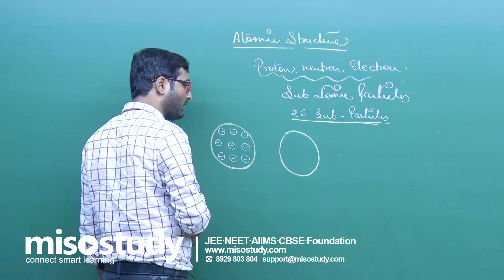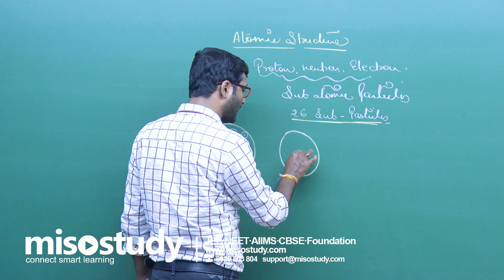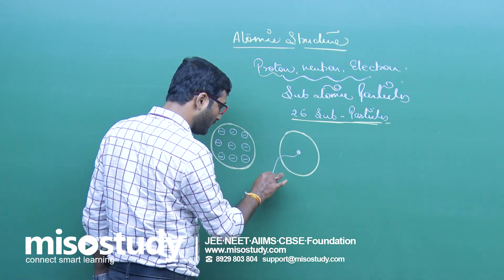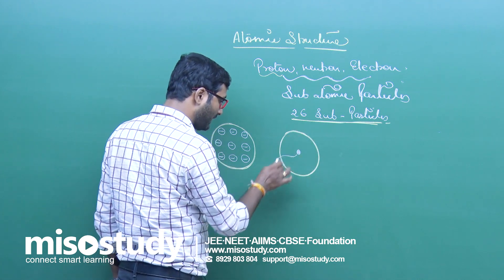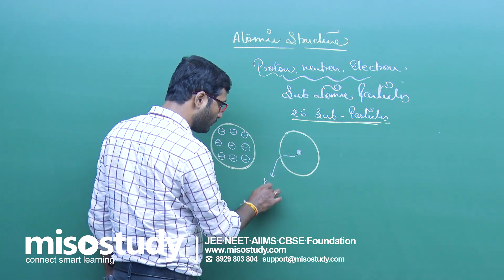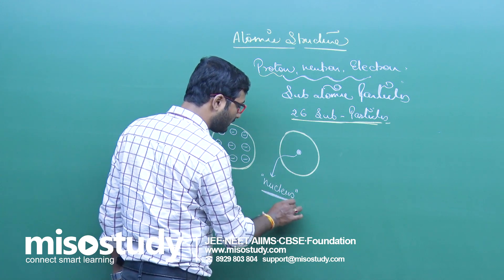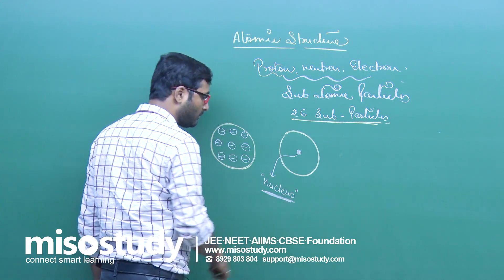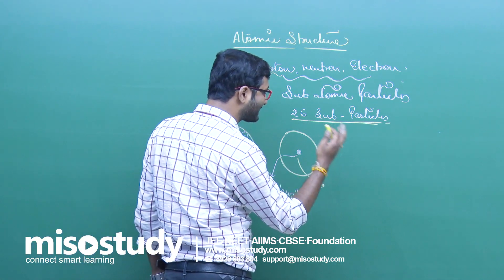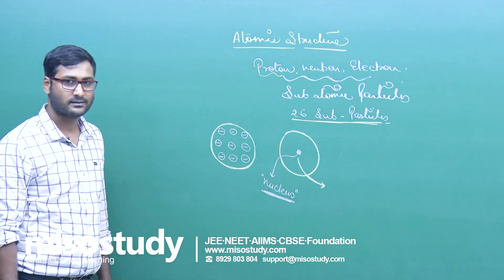Then came the Rutherford atomic model. According to him, the positively charged protons occupy a small space within the atom, and this small region or space is called the nucleus. Rutherford introduced the term nucleus — the place where the total mass, or the maximum fraction of mass, is concentrated.